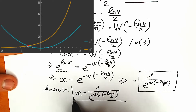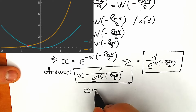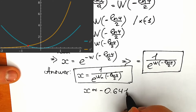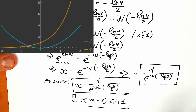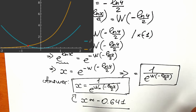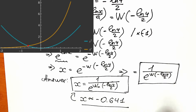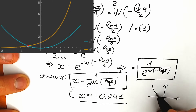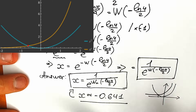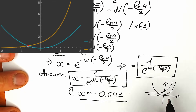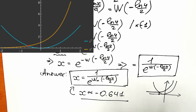When you plug this expression into an online calculator, you get approximately x ≈ −0.641. You can also verify this graphically: looking at the graph of x² and 4^x, you can see the point of intersection. It looks like there may be one point of intersection, and the graph gives a nice geometric perspective on the solution.